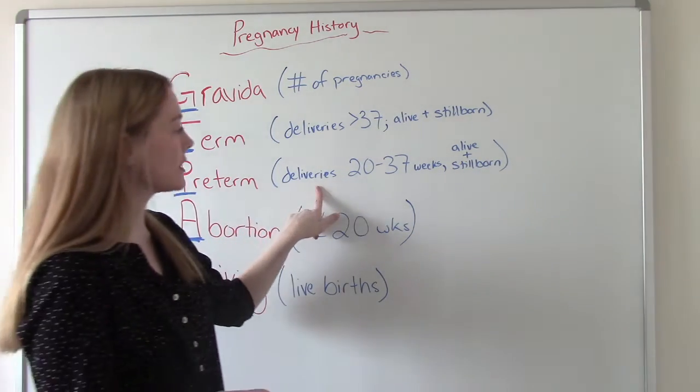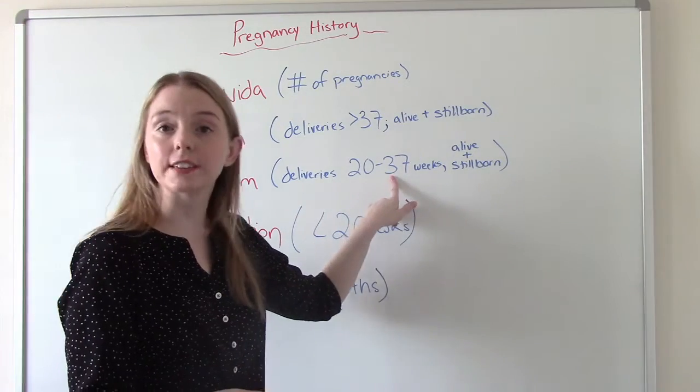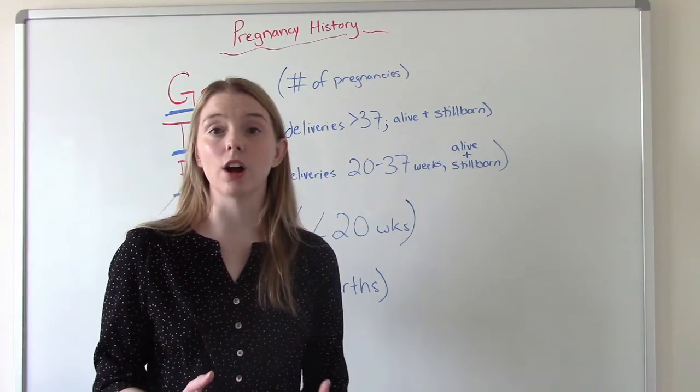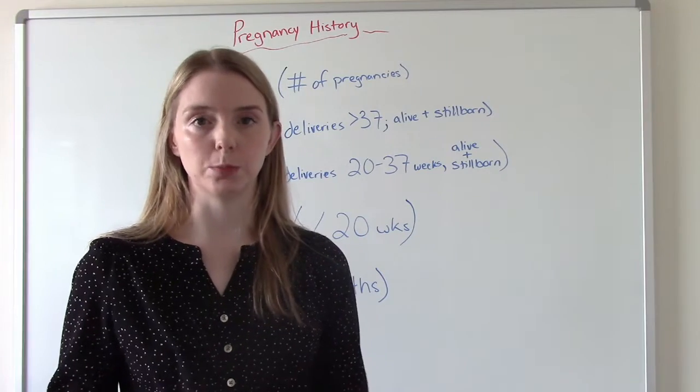Preterm is any deliveries that happen between 20 and 37 weeks. And again, this is also babies who are born alive and also babies who are stillborn.